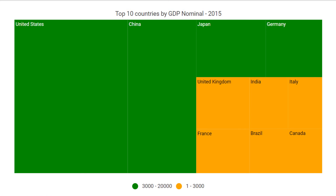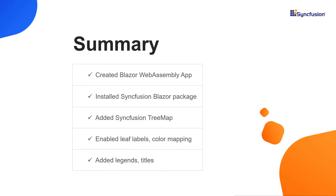If you need more information about the Syncfusion Blazor Treemap component, you can refer to our online documentation — a link is provided in the description of this video. To summarize: I have explained the steps to create a Blazor application and add the Syncfusion Blazor package, then showed how to add the Syncfusion Blazor Treemap component to the Blazor WebAssembly application. Finally, I explained how to enable leaf labels, color mapping, legends, and titles.